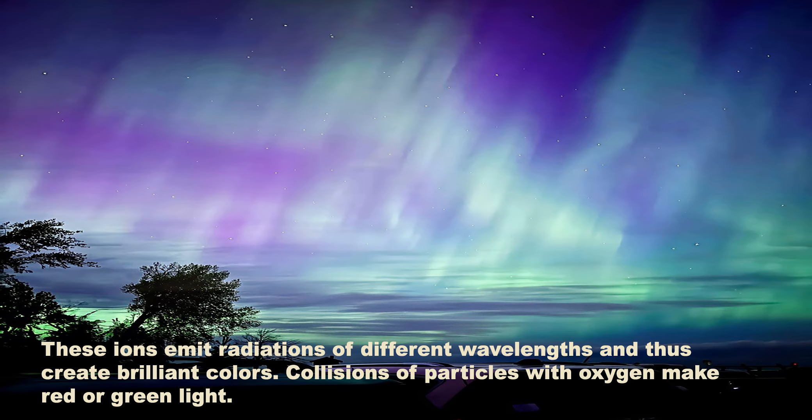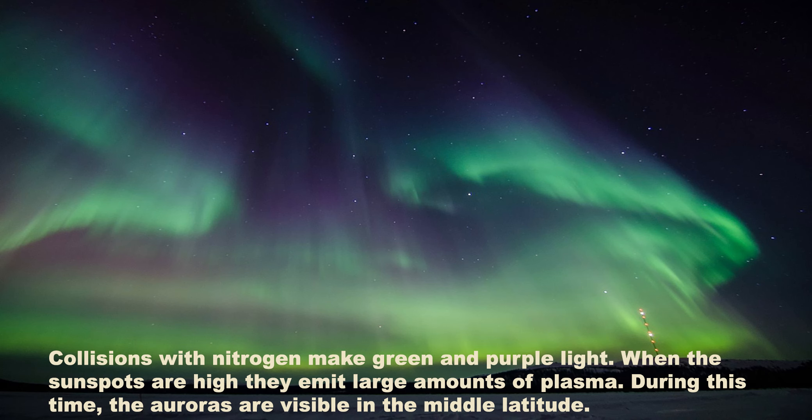Collisions of particles with oxygen make red or green light. Collisions with nitrogen make green and purple light. When sunspots are high, they emit large amounts of plasma, and during this time the auroras are visible in the middle latitudes.